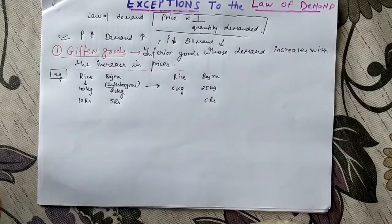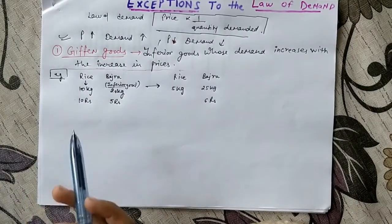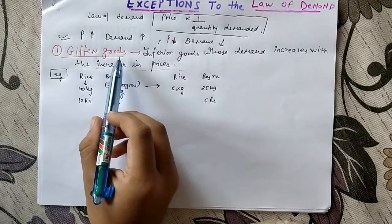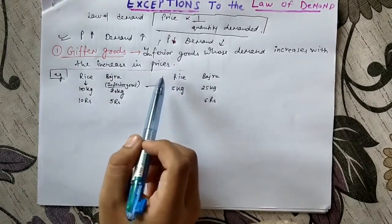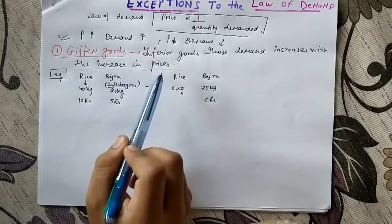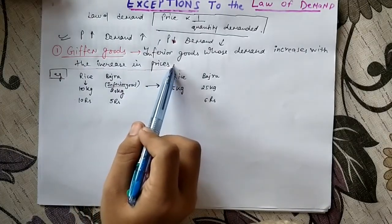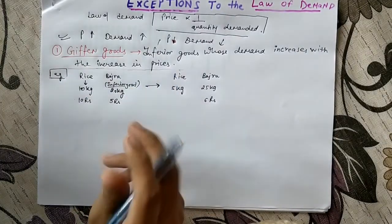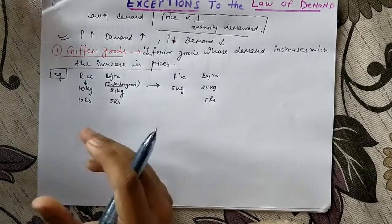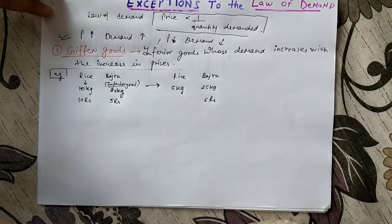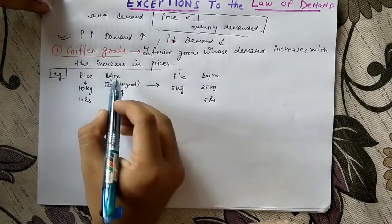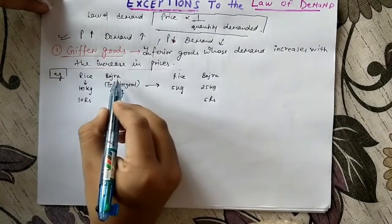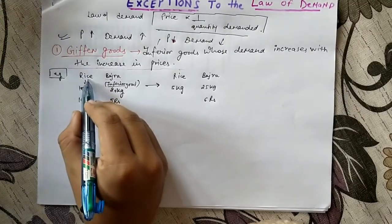The first exception is the Giffen goods. In this, what happens is inferior goods whose demand increases with the increase in prices. That is, when the price of the inferior goods increases as compared to the other higher-priced products, we will take more of this product and decrease the quantity of that product.